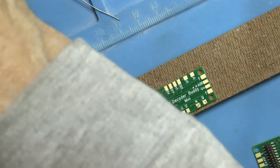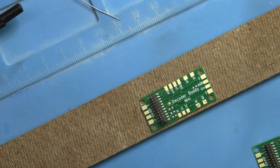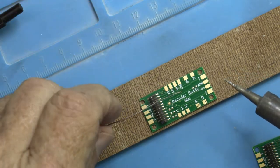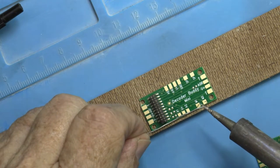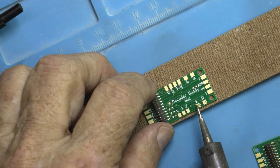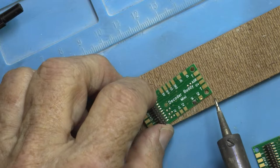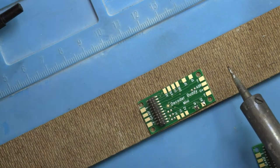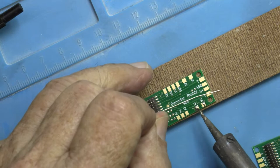What I'm doing here is I'm just tinning the pads. This is the method I don't like, where you take a little bit of solder and tin a pad with the solder on the soldering iron. See, it isn't consistent.